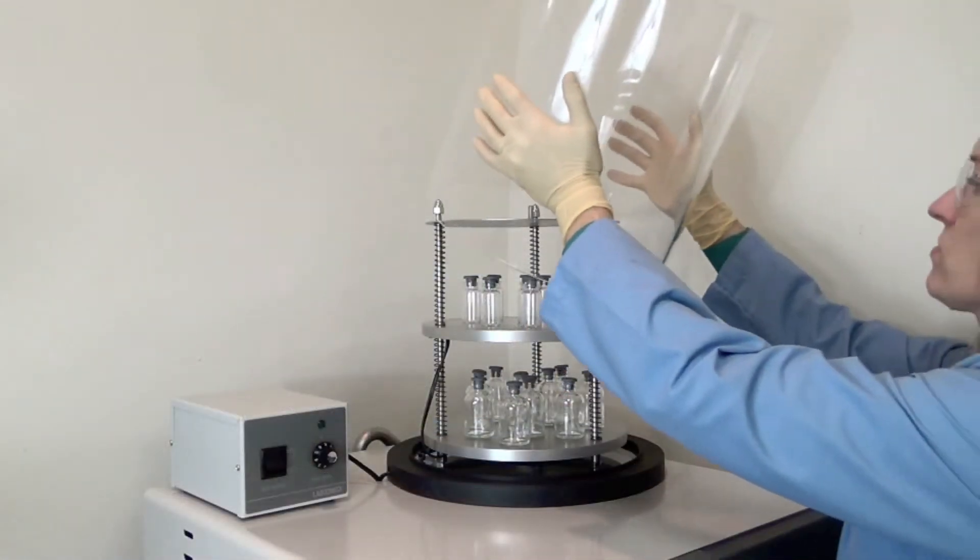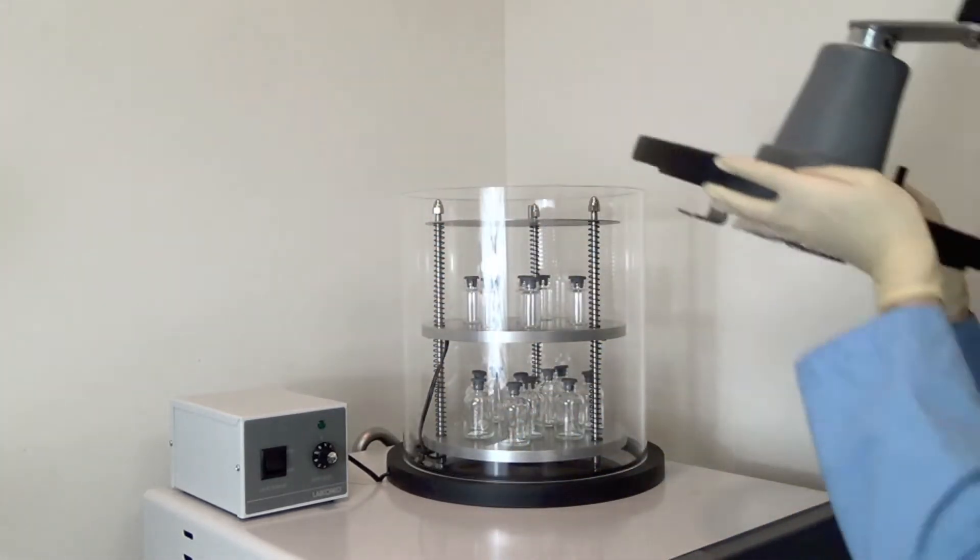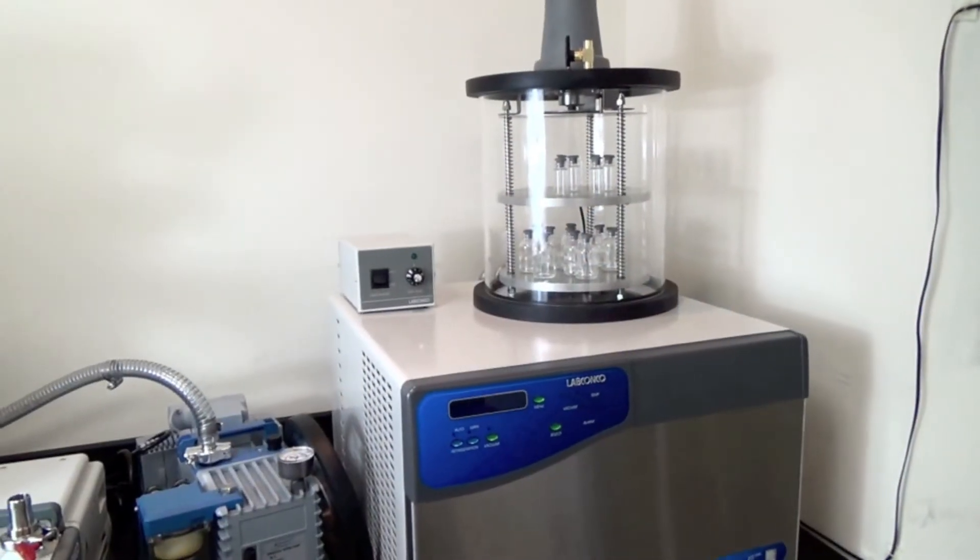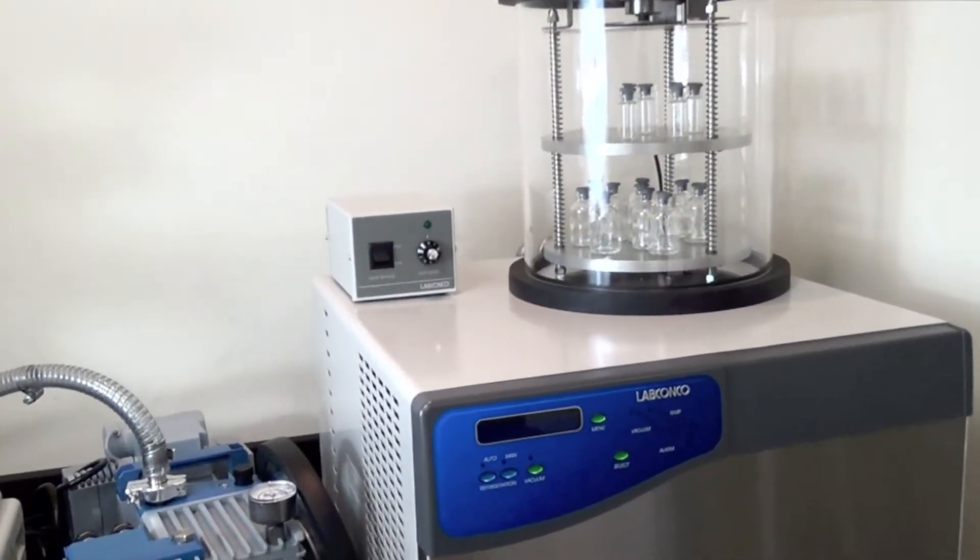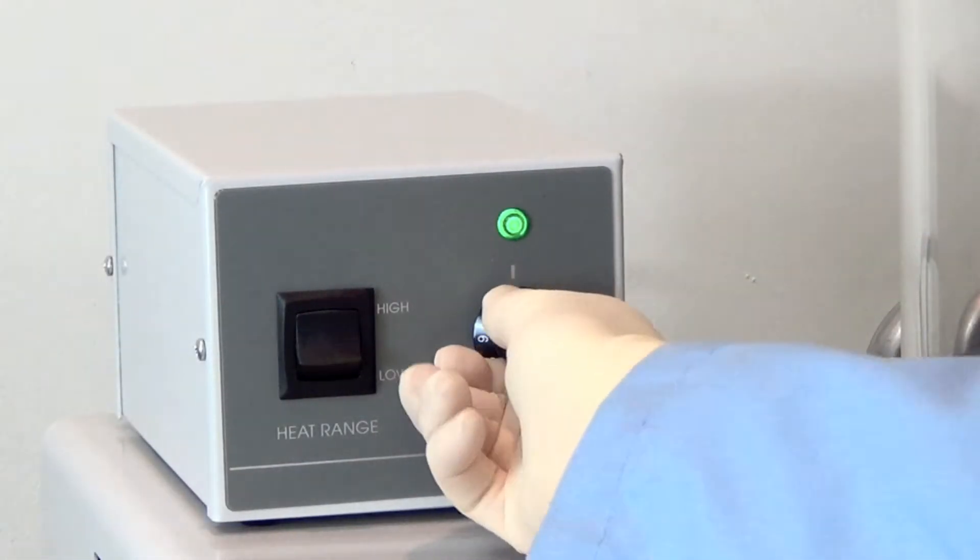When the samples are properly arranged on the shelves, replace the acrylic chamber and lid and start the vacuum pump. As the samples enter secondary drying, the use of the product heater will help remove bound water to continue the sublimation process.